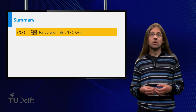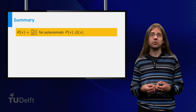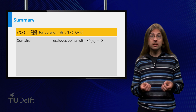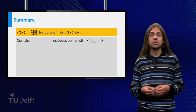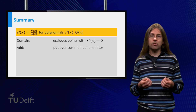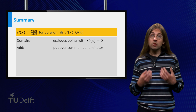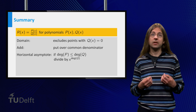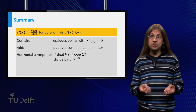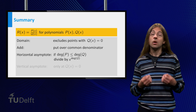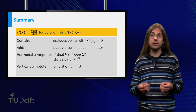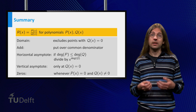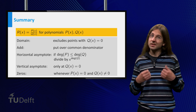To summarize: rational functions are the quotient of two polynomials. A rational function can only be defined for the x values for which the denominator is unequal to zero. You add rational functions by making the denominators equal. The graph of a rational function often has asymptotes. Horizontal asymptotes can be found by dividing both numerator and denominator by the highest power of x occurring in the denominator. Vertical asymptotes can be found by looking at the zeros of the denominator. The zeros of the rational function are found at the zeros of the numerator. Good luck with the exercises!